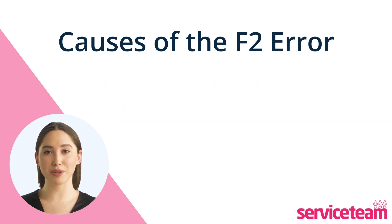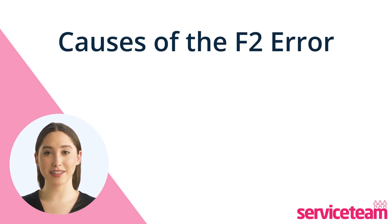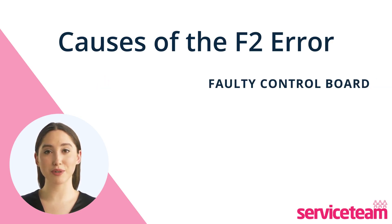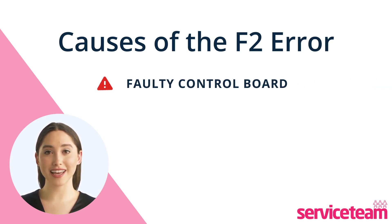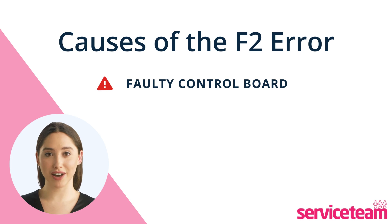The control board manages the boiler's operations by getting information from sensors and sending signals. If the control board is faulty, it can cause wrong sensor readings or fail to send the right signals to the ignition electrode, resulting in the F2 fault code.